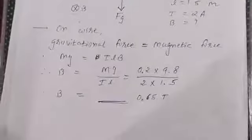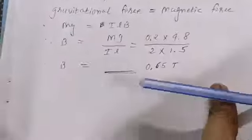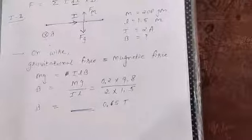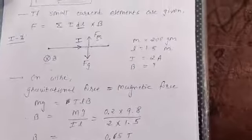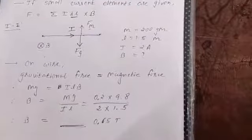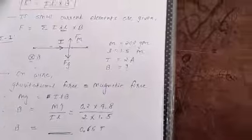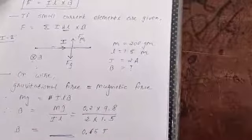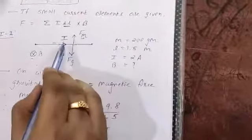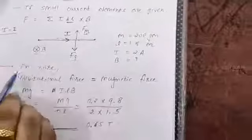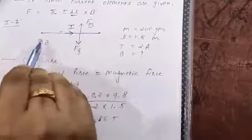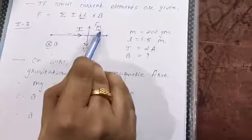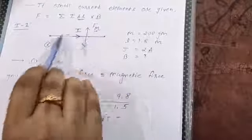If you are confused about the direction of magnetic force, remember we can find the direction by Fleming's right-hand rule, or simply remember that the direction of magnetic force is perpendicular to both current and magnetic field — same as magnetic force on a charge is perpendicular to velocity and magnetic field. Here current I is in the X direction and magnetic field is in the Z direction, so magnetic force will be in the Y direction, due to which the wire is hanging in air.